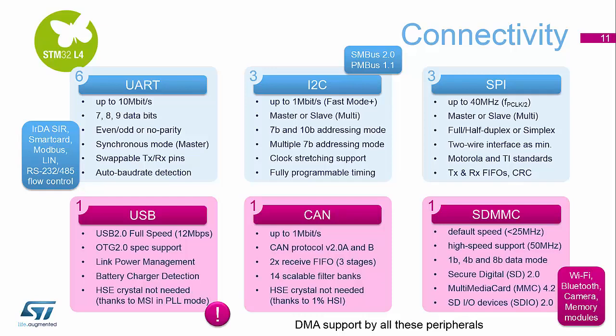The I2C — we have three of those on the family — now supports the new fast mode plus, so one megabit per second data rate. Just like the UARTs, they are multi-configurable: master/slave, different address modes, and clock stretching is also supported. We also have the ability to support SMBus 2.0 and PMBus 1.1 on the I2C peripheral.